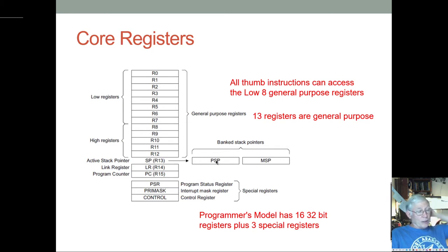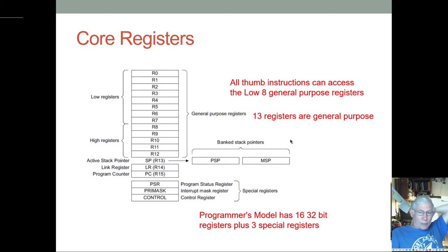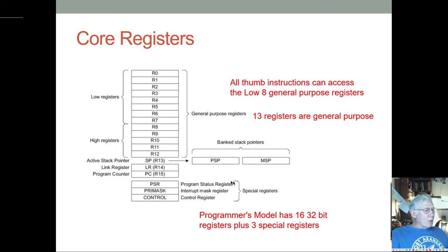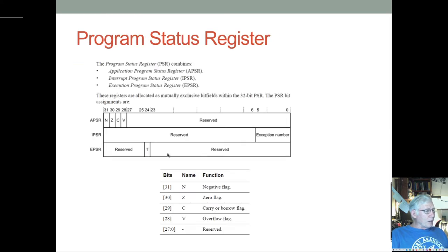There is a stack pointer — they could have implemented two but they only implemented one, so everything runs with the same stack pointer. With two stack pointers you could let applications use one and the OS use the other, which is helpful for writing an operating system, but they chose not to do that. You can still have an RTOS, you just don't have that advantage. Then there's a link register and a program counter, which points to the next instruction, though pipelining keeps it a little ahead.